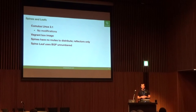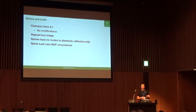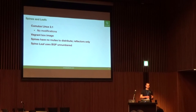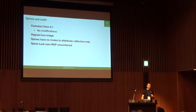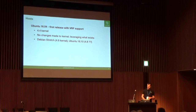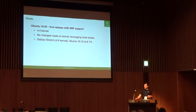For this demo, it's using the Vagrant box image, available from the HashiCorp website. I have made no modifications to that at all — you can download it, install it, and go. The spines have no routes; those are strictly used as reflectors for the two pieces of the network. Because of the full VRF implementation in Cumulus Linux, the spine-leaf config for Quagga can use BGP unnumbered. The Quagga config for those two nodes is really simple. But this is the interesting part — this is where I want to get people thinking about VRF on the end nodes.